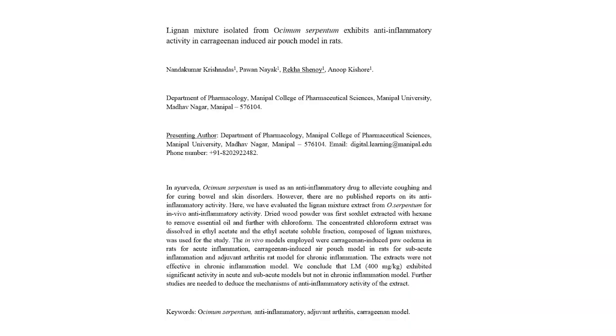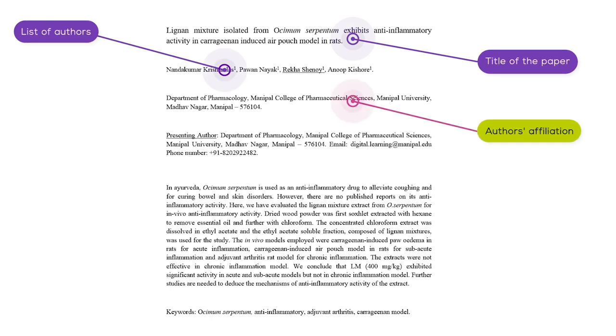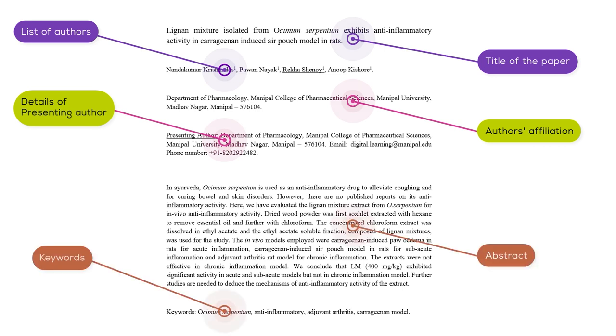The general structure of an abstract contains title of the paper, list of authors, author affiliation, details of the presenting author, body of the abstract, followed by keywords. Let us discuss these elements one by one.